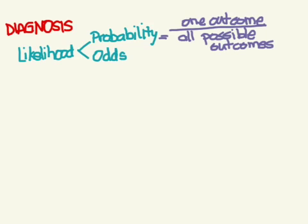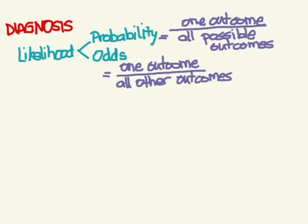With odds, you have one outcome in the numerator, but the denominator has all other possible outcomes except the one you're looking for. This is best illustrated by a couple of examples.